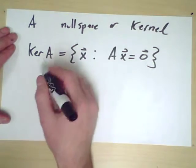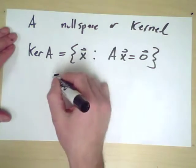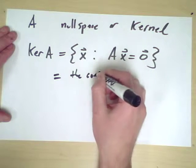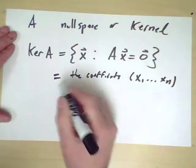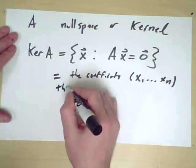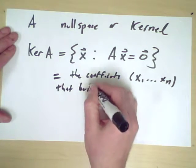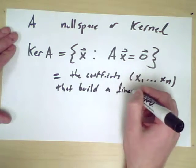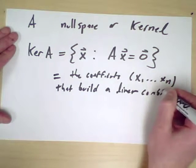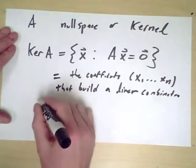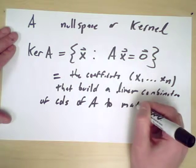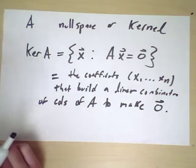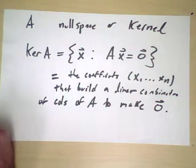But based on the discussion of columns in the previous slides, we can also say this as, these are the coefficients x_1 through x_n that build a linear combination of the columns of A to make 0. In other words, how many different ways, and what are the ways I can combine the columns of A to make the 0 vector?